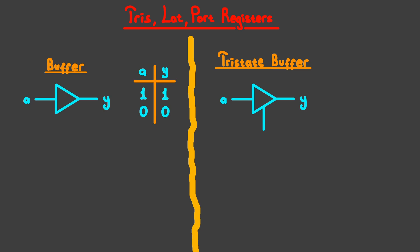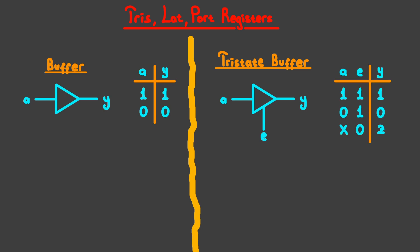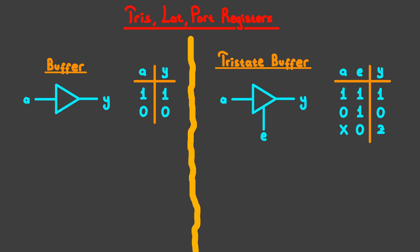For the tristate buffer, there's another input which I'll denote as E. The reason this gate is called tristate is because it has three states. This is the truth table for the tristate buffer — the X means any value, and this new term Z means that the output Y will be in a high impedance state, sometimes written as high-Z. When the output is like this, we can imagine it as if the output is disconnected from the input, so the third pin acts like a switch to enable or disable this gate. When E is 1, it acts just like a normal buffer, but when E is 0 the output is essentially disconnected from the input.